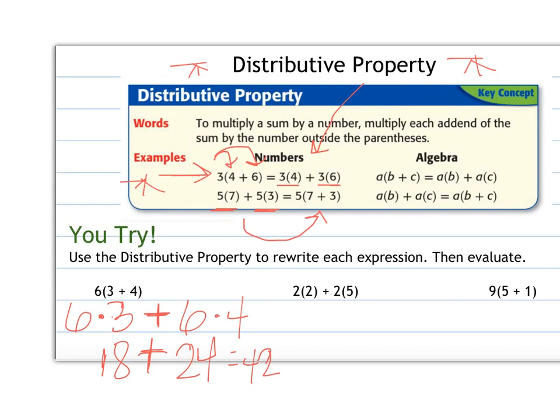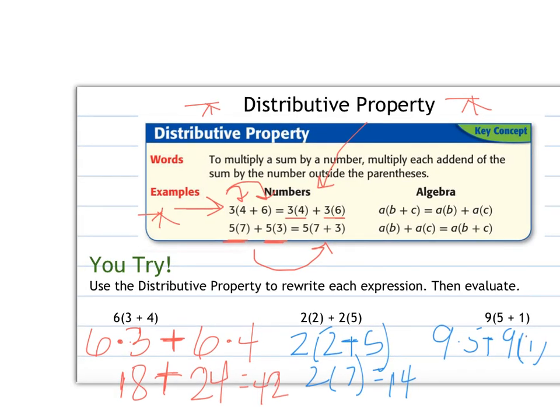I would like you to try these next two so pause me and then come back and check your work. So I would write this as 2 multiplied by 2 plus 5 and then when I evaluate I would do 2 plus 5 is 7 times 2 so 2 times 7 and I get 14. And then here I would do 9 times 5 plus 9 times 1 and then 9 times 5 is 45 plus 9 would be 54.